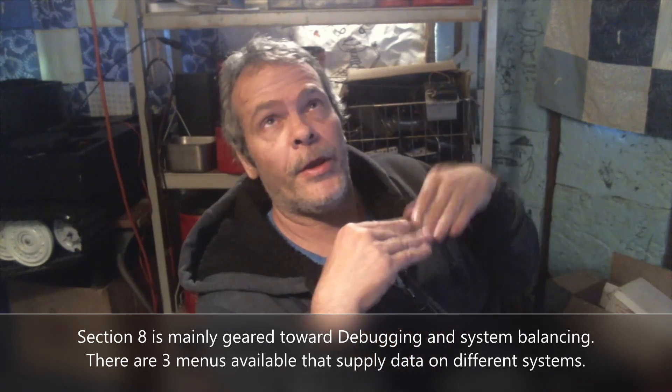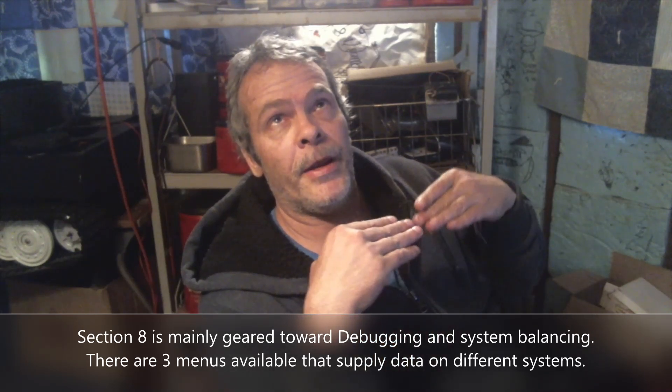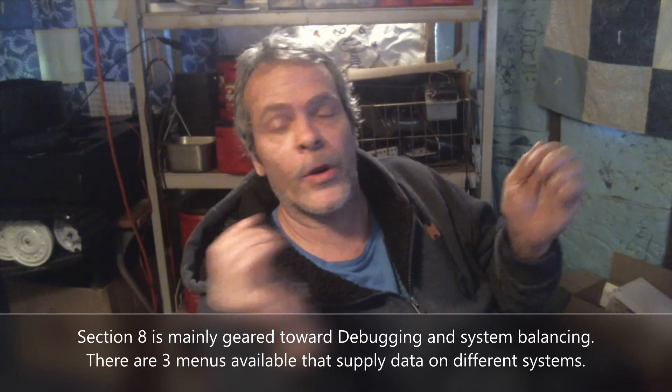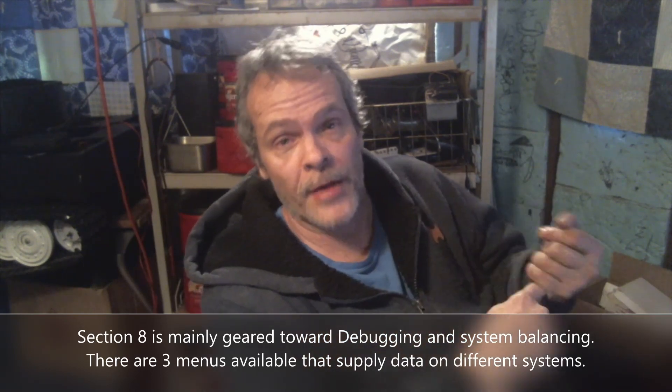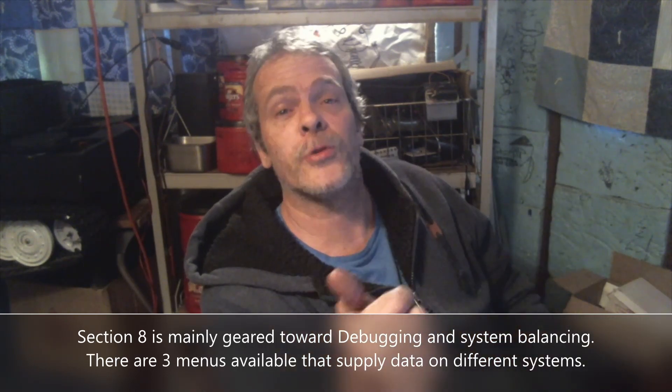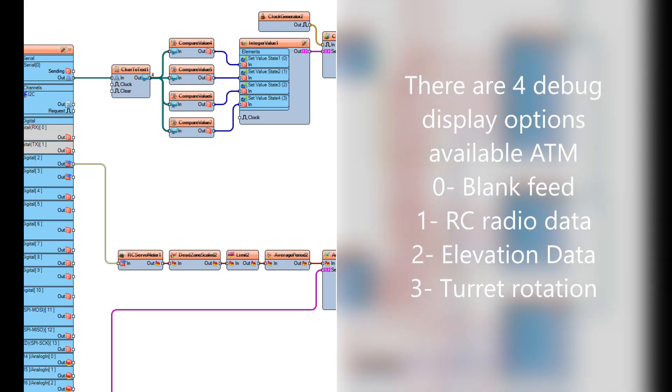If you put in number two it gives you a data readout for the elevation controls. If you push in number three it gives you the data readout for the turret slew left and right controls. So this is pretty much for debugging and getting the balance of the numbers correct. The first section is where it's taking whatever you enter in the serial monitor and comparing it in those four compare text blocks. Those are set to zero, one, two and three.